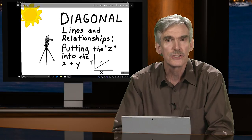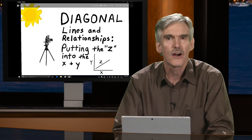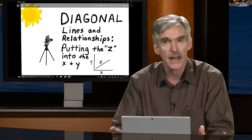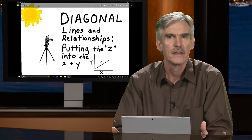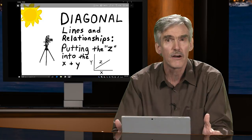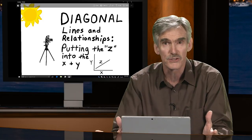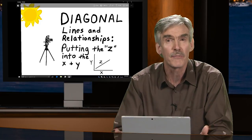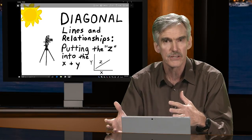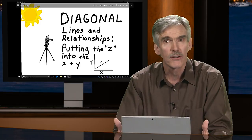Diagonal lines work because they put the Z into the X and Y, as I like to say. X and Y refers to the Cartesian coordinate system — the Y axis is vertical and the X axis is horizontal. This was developed by philosopher and mathematician René Descartes in 1637. We use it in photography by adding a Z axis — the diagonal axis — which is also used in 3D applications to create a sense of depth, because we do have a two-dimensional medium in photography and must add depth by integrating that diagonal line or Z axis.